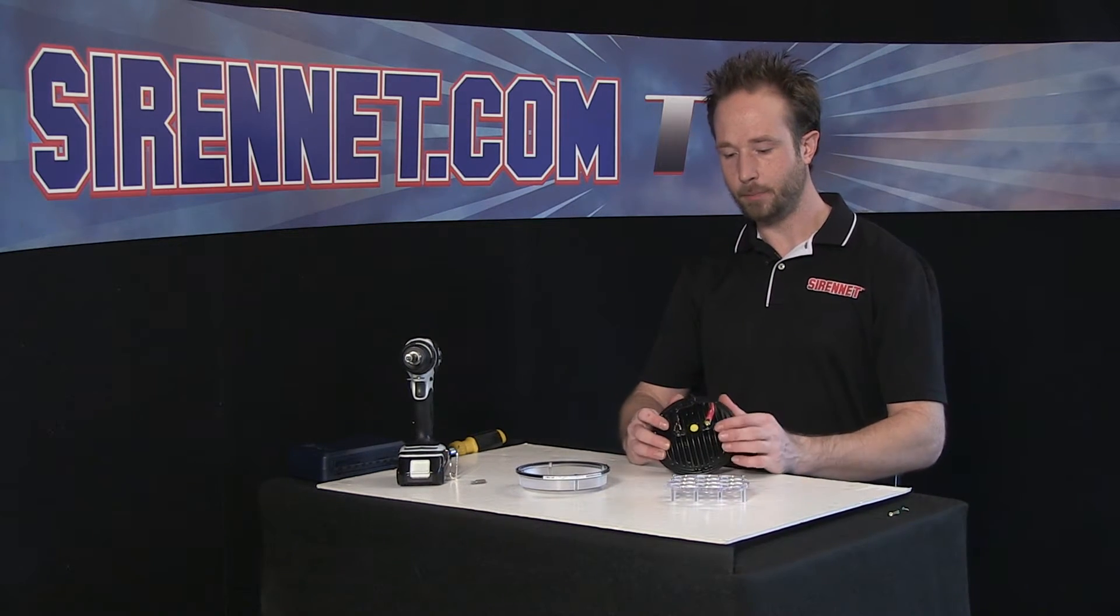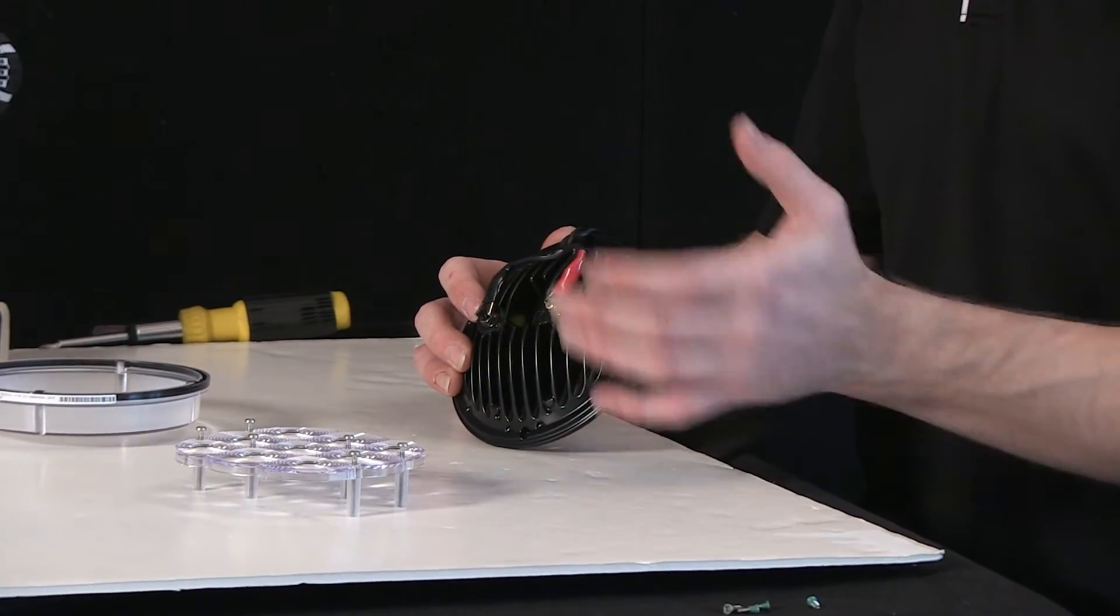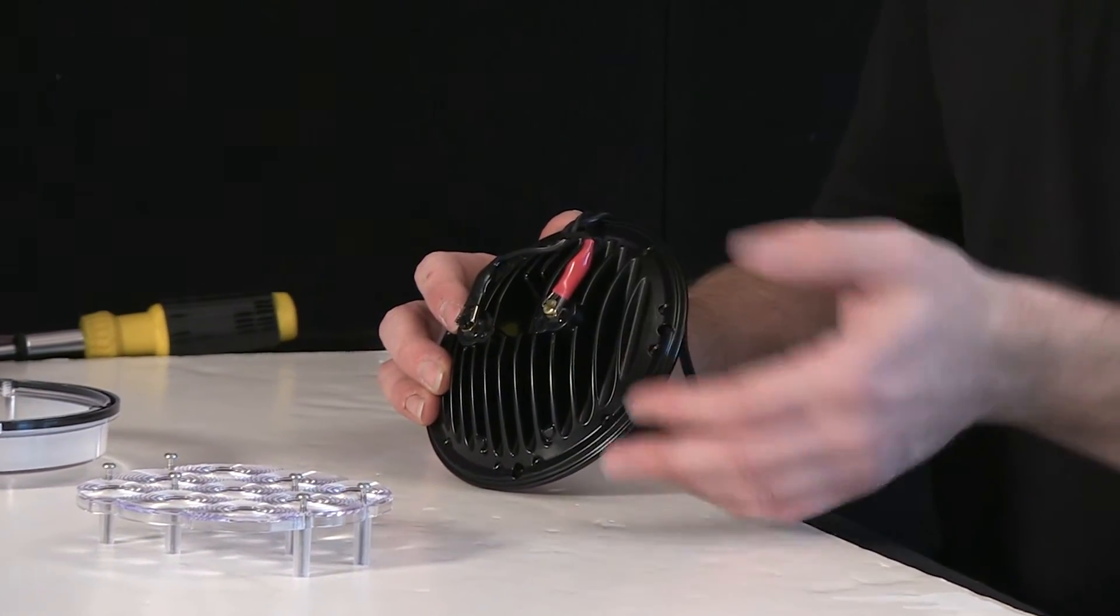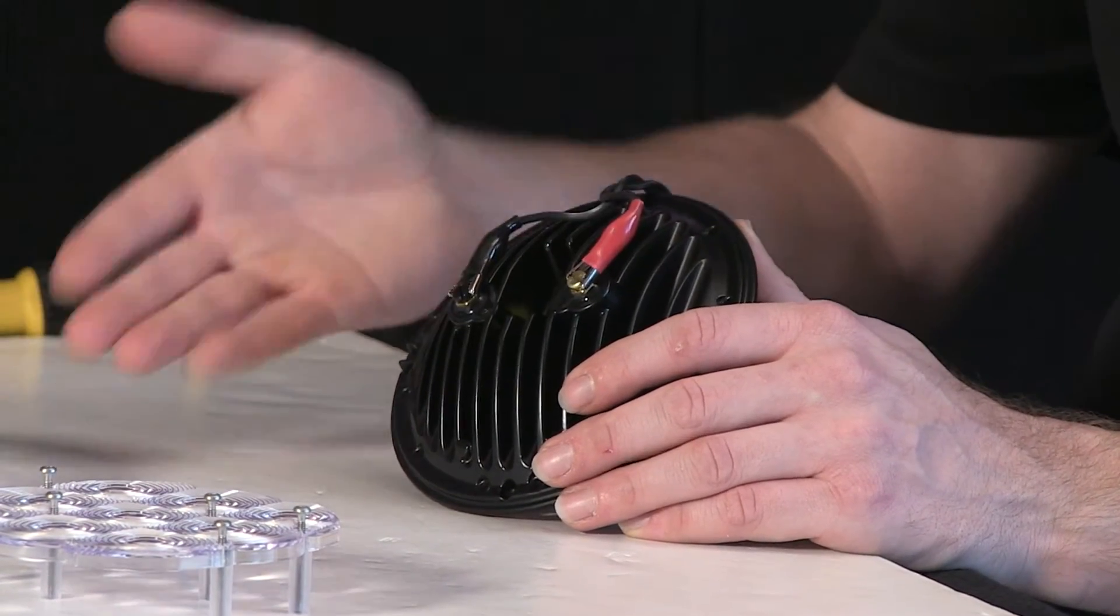And also on the back here, two screw posts. These are where you'll fix your wire connections in your 6 inch housing, be it Unity or any other kind you may have. You have a ground and a lead, and it's designed for 12 volt.